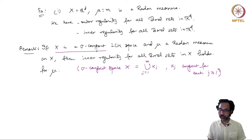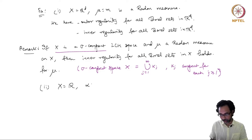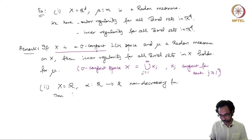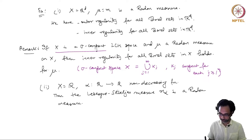We have seen that the Lebesgue measure on R^d is a Radon measure. In fact, if you take x to be the real line and alpha is a non-decreasing function on R, then the Lebesgue-Stieltjes measure M_alpha that we constructed before is also a Radon measure. So all the nice examples of measures we have seen until now are Radon measures.